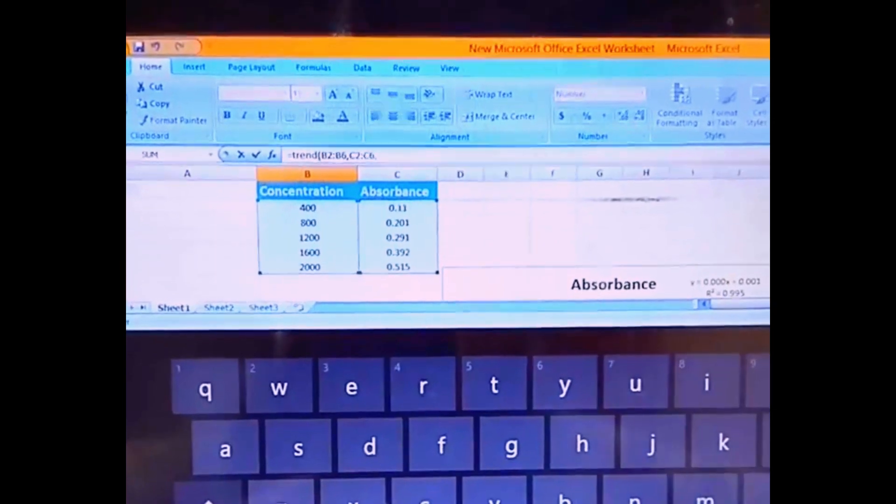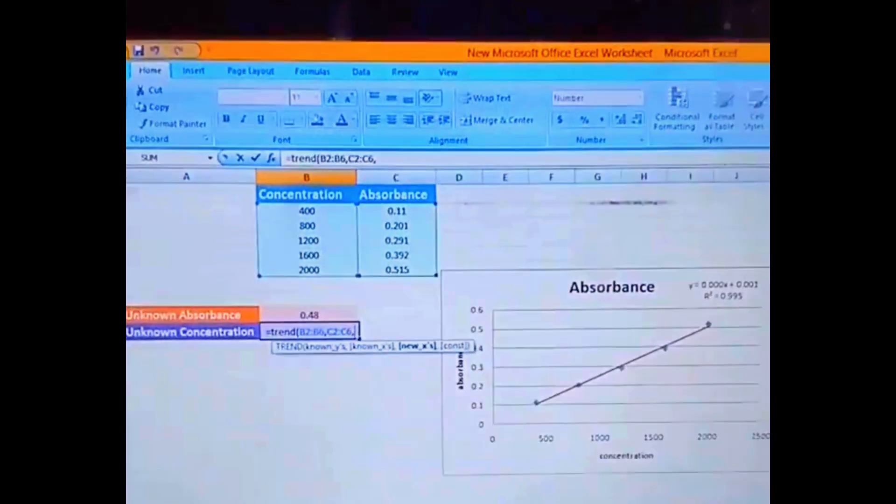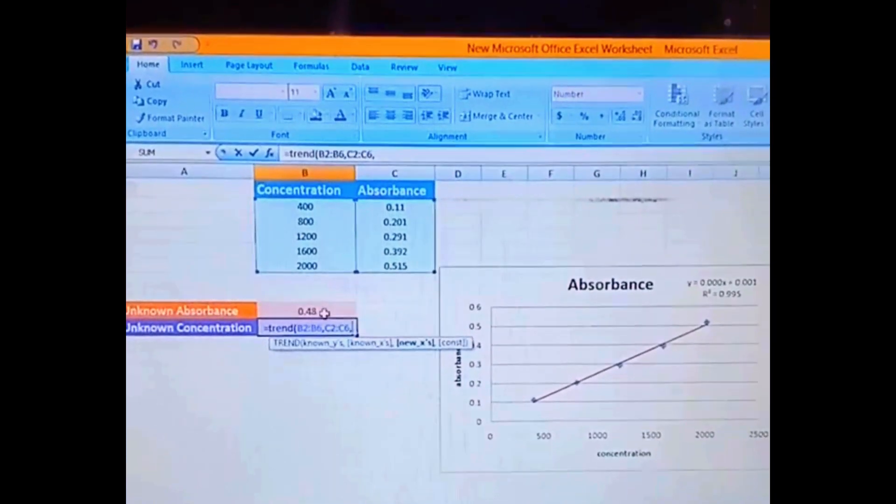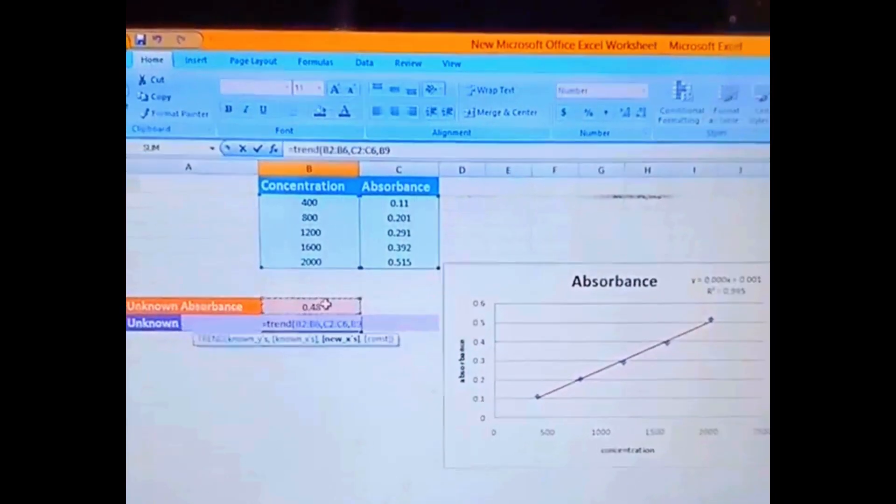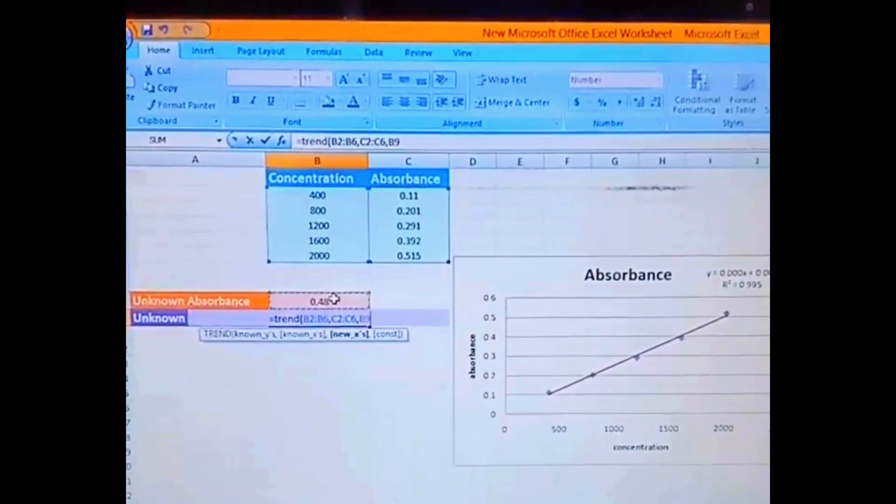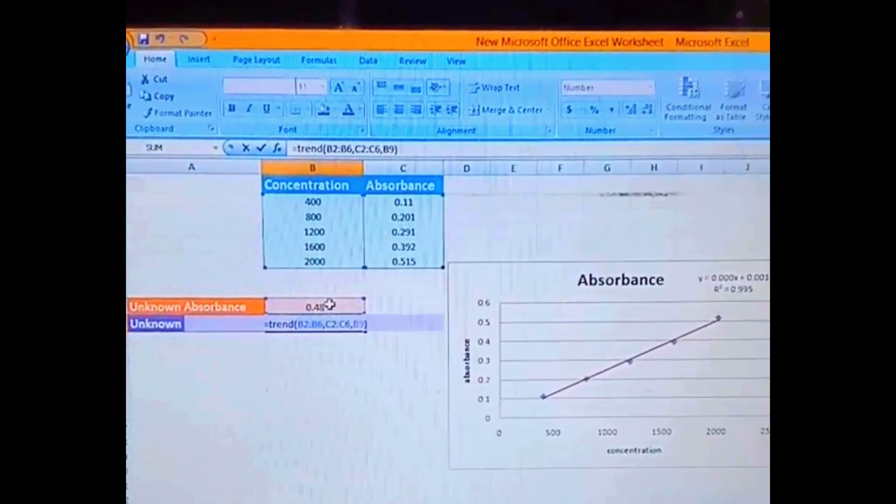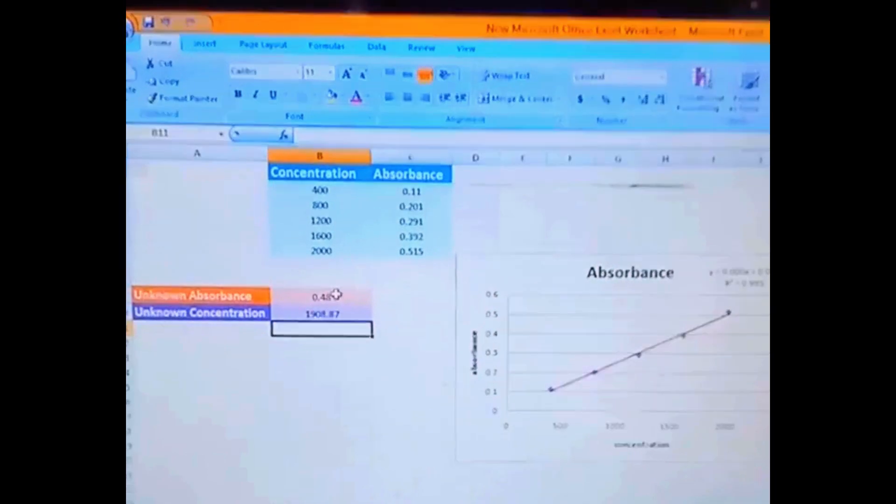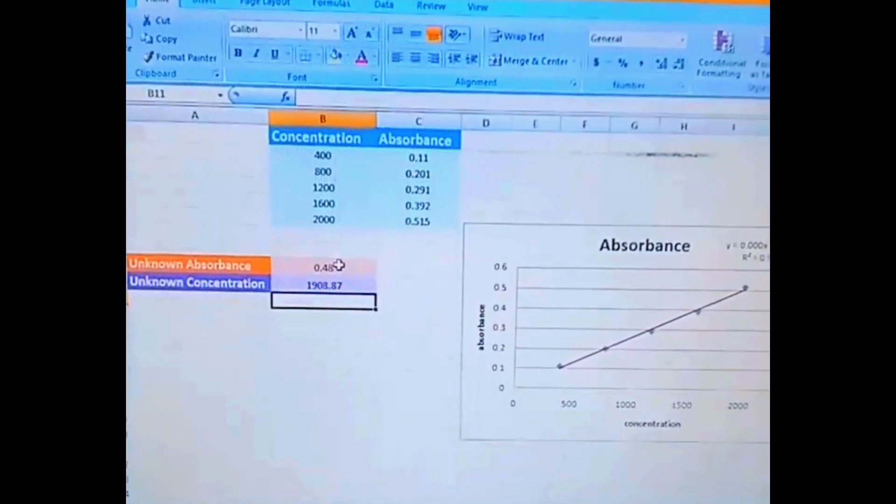Now again I am putting here the comma, which is the essential part, otherwise you will not get your answer. And now we have to select this unknown absorbance value. Now we have to close our parenthesis and enter it, and here is the value of the unknown concentration.